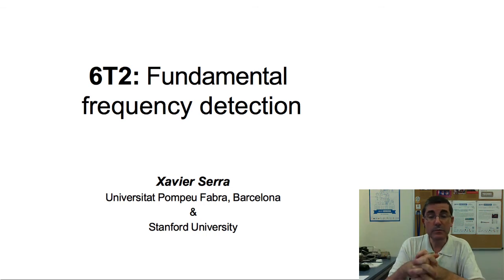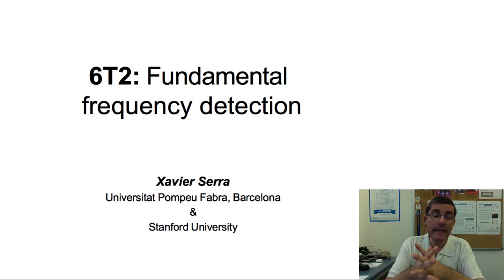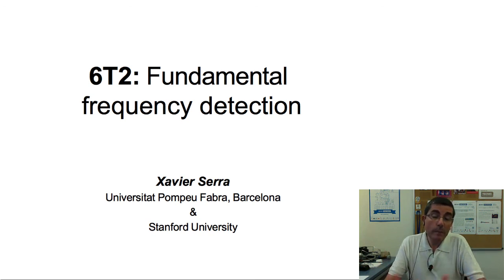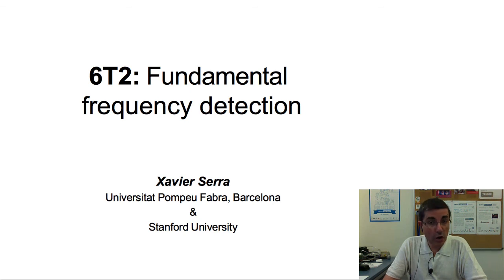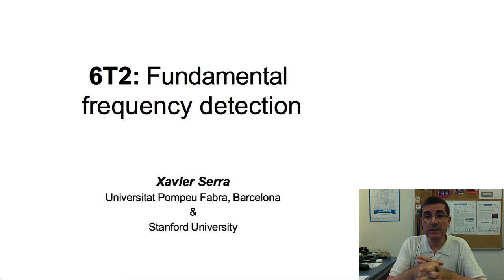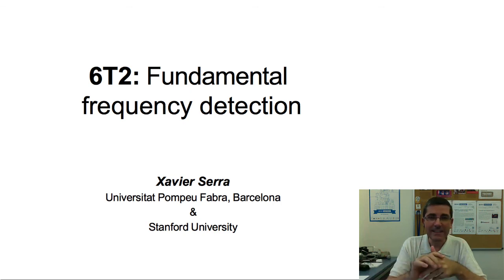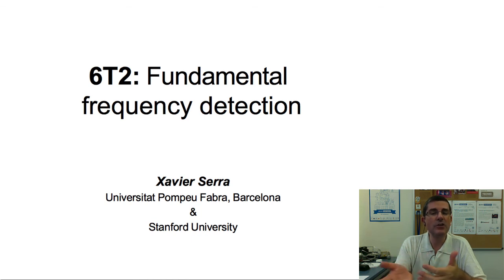In this lecture we presented different approaches to fundamental frequency detection. This is a research problem that has not been completely solved yet, especially for complex signals. To keep things manageable, we will focus on monophonic signals, but the concepts should also be applicable to any type of signal. By combining the harmonic model from the previous lecture with the F0 detection just presented, we can analyze and synthesize harmonic signals. See you in the next lecture where we will take this further and explore what happens when the harmonic model does not work so well.